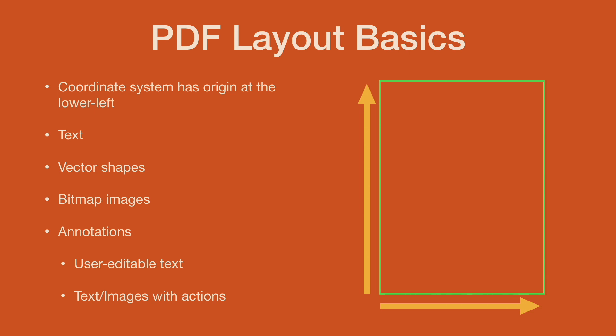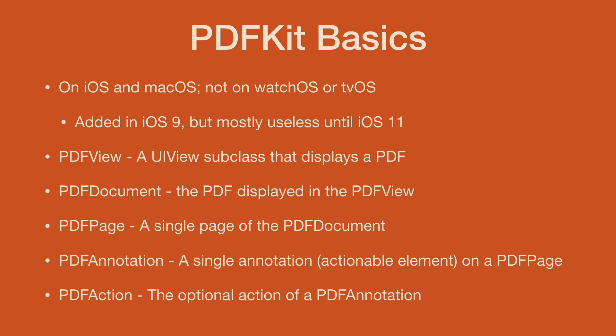PDF files contain text, vector images, bitmap images, and annotations, which is how we're going to be spending some of our time today. Annotations are things added to the page that do something or are something — user editable text, forms, and images can have actions on them. PDFKit was originally introduced in iOS 9, but it kind of sucked in iOS 9. In iOS 11, they made it a lot better, adding annotations, edits, and things like that. So in my head, it's an iOS 11 and later feature.